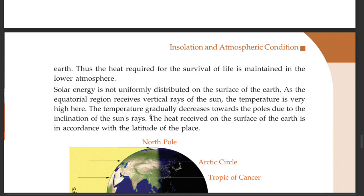The temperature gradually decreases towards the poles due to the inclination of the sun's rays. The heat received on the surface of the earth is in accordance with the latitude of the place.